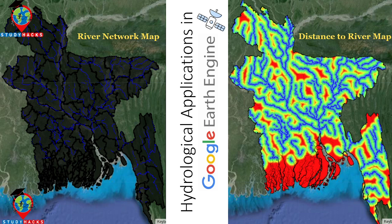Using Google Earth Engine — let's go. You can see I already made the maps: one is the river network map for Bangladesh, and the other is the distance-to-river map. I will now explain all of the code, how I created these types of maps using Google Earth Engine, so you can easily understand the idea behind this code.